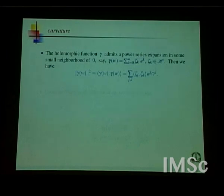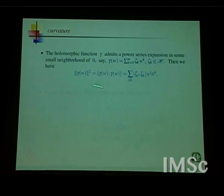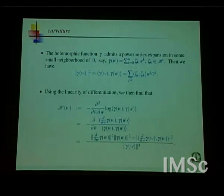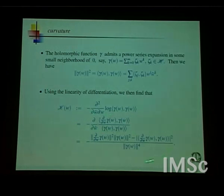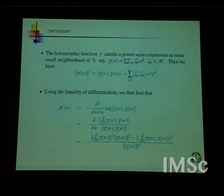You begin more generally: start with a holomorphic function — being holomorphic simply means you have a power series expansion. The norm of that holomorphic function will look like a certain expression, and you do a calculation. Because this is a norm, this is an inner product, this is holomorphic in one variable and anti-holomorphic in the other. This gives you an expression, and those who remember a few slides back, there was a calculation for h(ω) — this new expression is that expression except you take a square root and reciprocate.